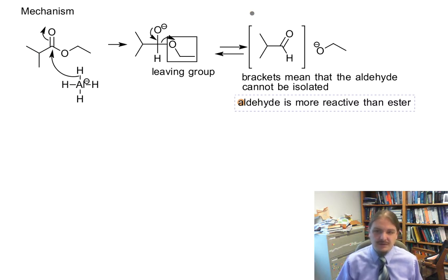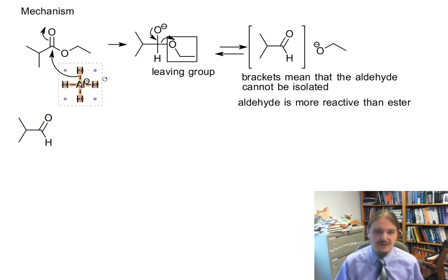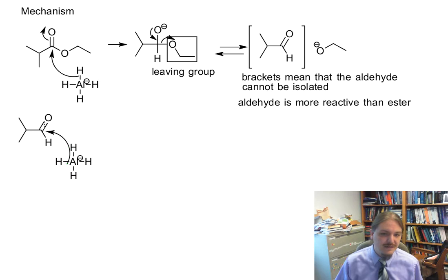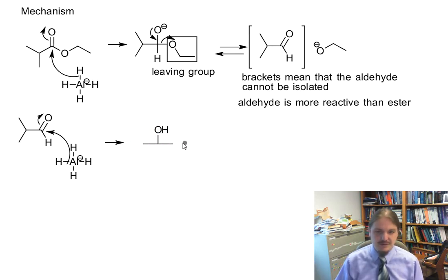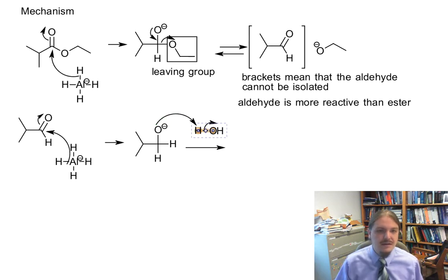Now that we have the aldehyde, the aluminum hydride anion is going to do the same thing it did before: nucleophilic attack on the carbonyl group. We get a different alkoxide intermediate, this time without a leaving group on it. And finally, we can have our aqueous workup — our proton source — which generates the alcohol.